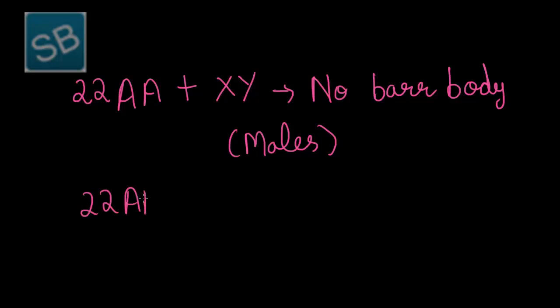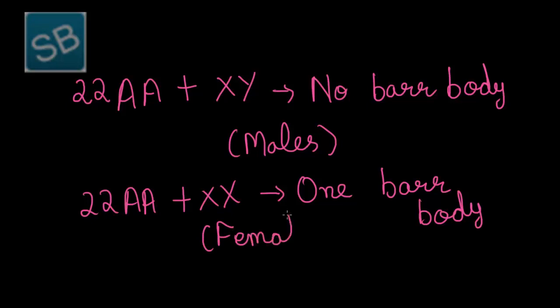Second, in case of females, where 22 autosomes and one sex chromosome, that is XX, one Barr body occurs. Because after eliminating one X chromosome, there remains a single X, and so it is one Barr body. And therefore, in females, one Barr body occurs.